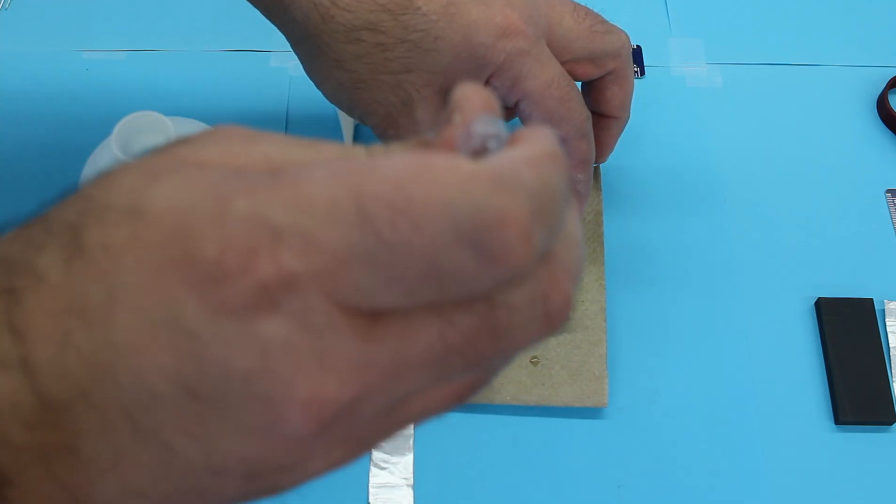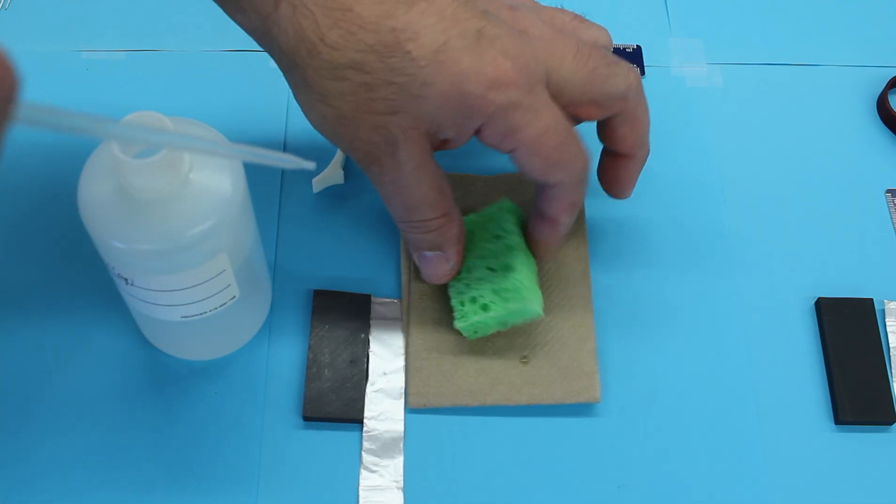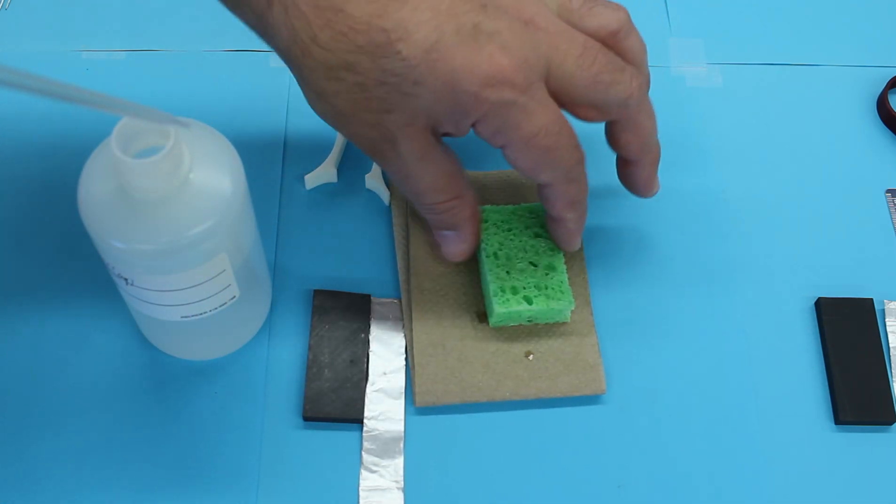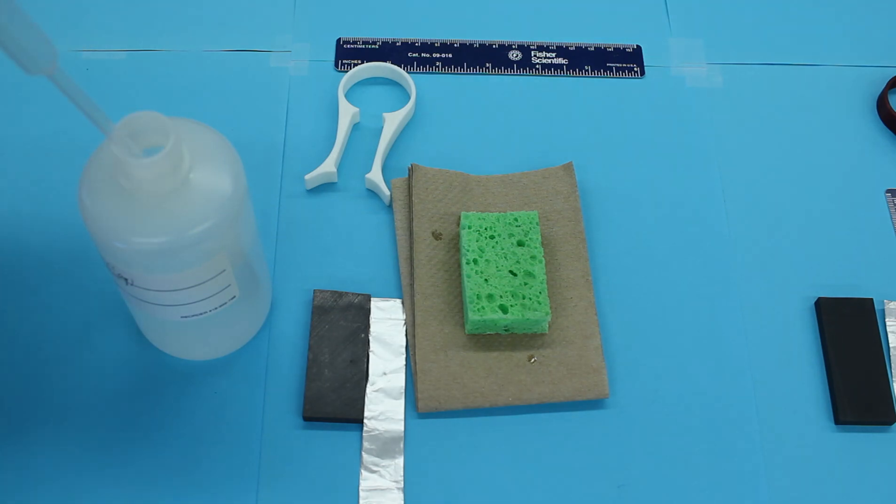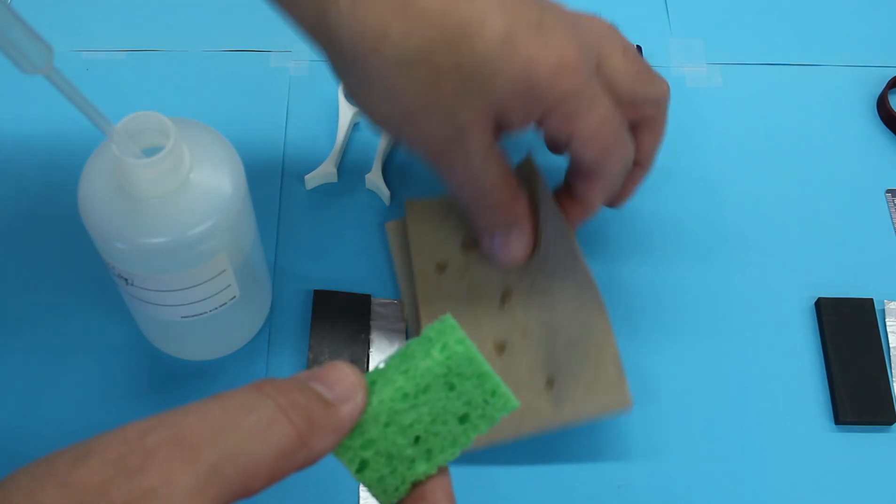And just a little bit more. Okay, so my sponge is damp and should be sufficient. I can always add a little bit more sodium chloride to it to assemble my battery.